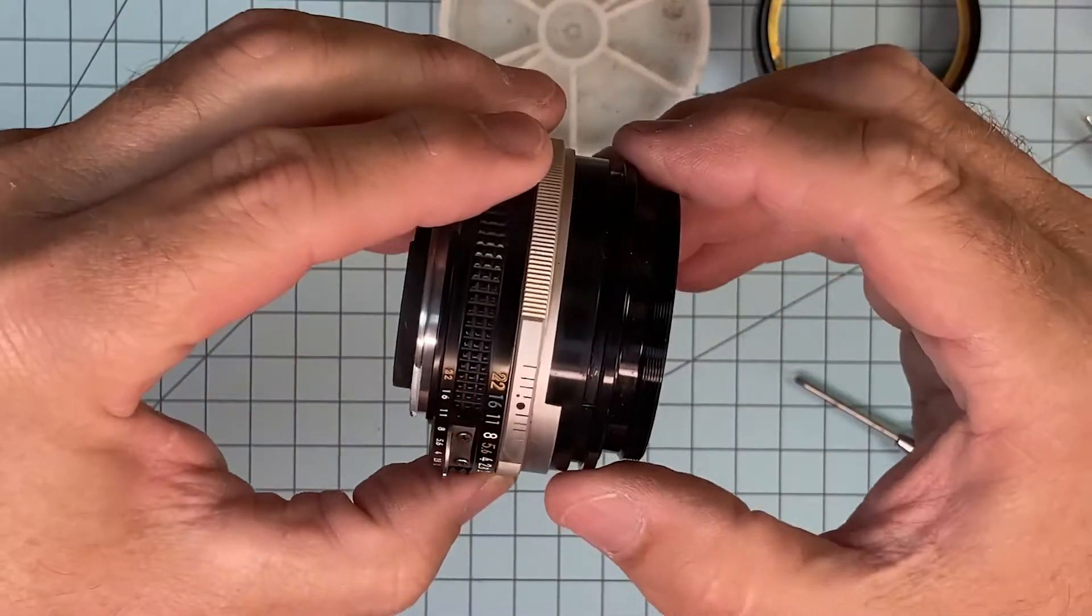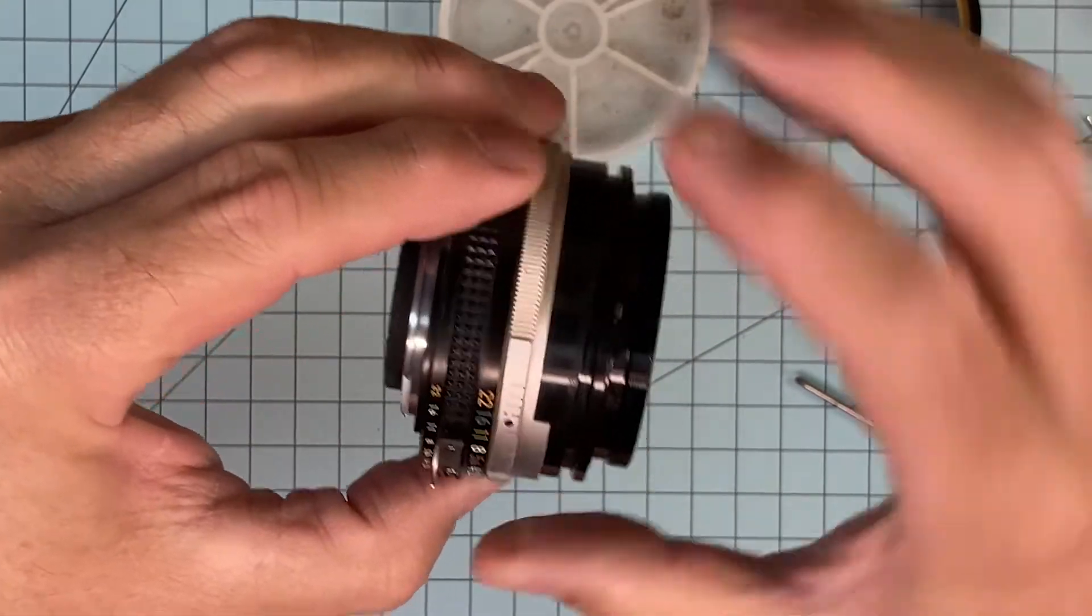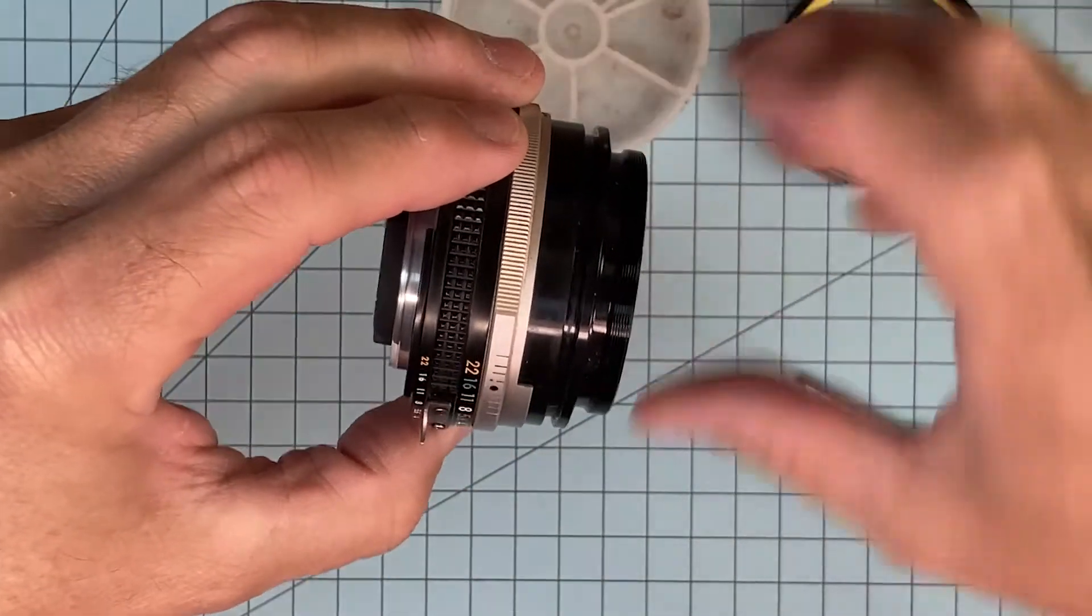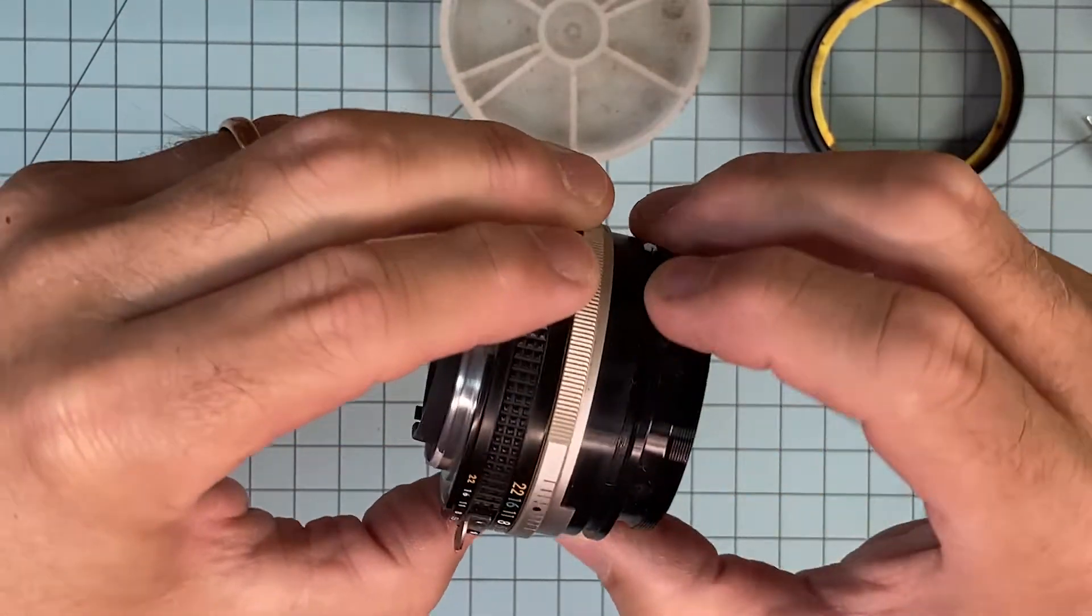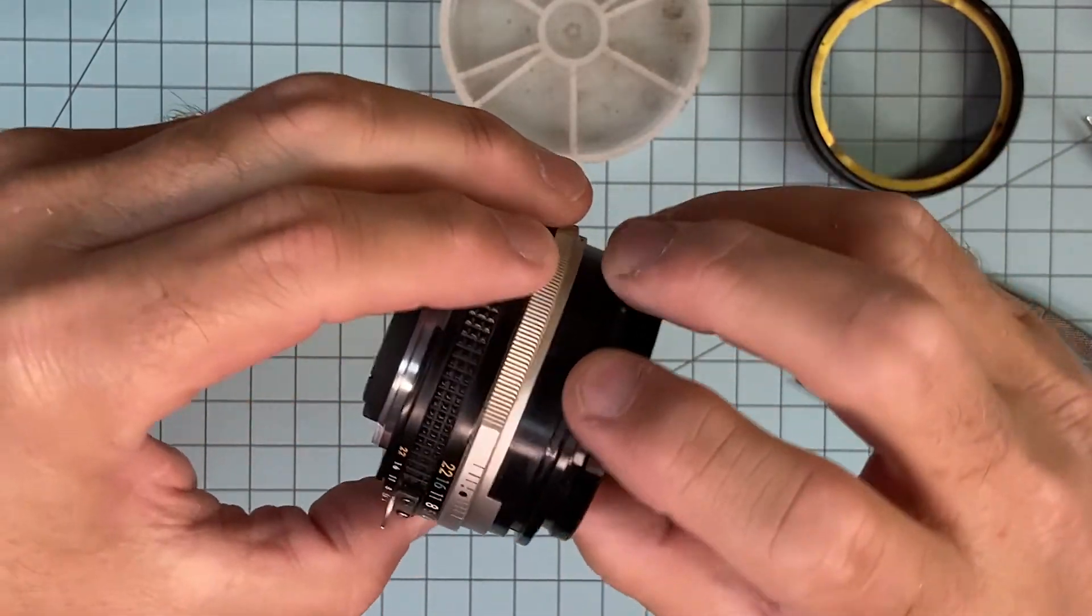This is your focus ring right here. It'll close down, but there's no stop in it because your stop is on this ring here. It will feel mushy when you get to the back, but don't worry about that. Just don't bend anything.